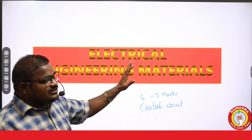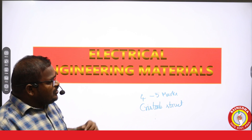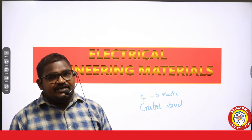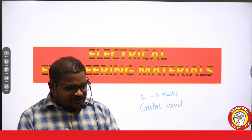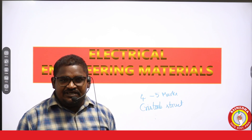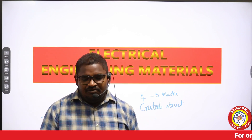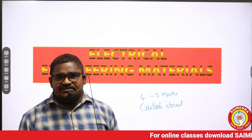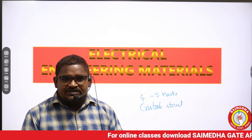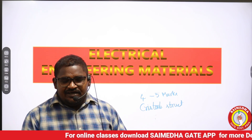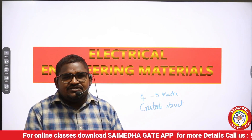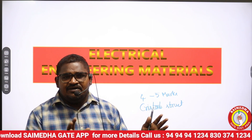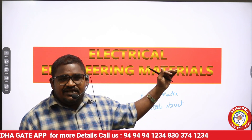That is electrical engineering materials. What do you mean by material? In electricity, what are the various materials we have? If you start network theory, we see there are three kinds of materials: conductors, semiconductors, and insulators. A conductor can easily allow the current, an insulator cannot allow the current, and a semiconductor can allow the current partially. So those three things we know.